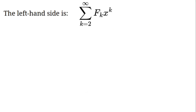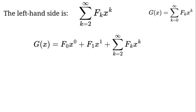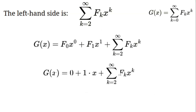Let's simplify each part. First, the left-hand side: the sum from k=2 to infinity of f(k)·x^k is just g(x) - f(0) - f(1)·x. Since f(0) = 0 and f(1) = 1, this simplifies to g(x) - x.